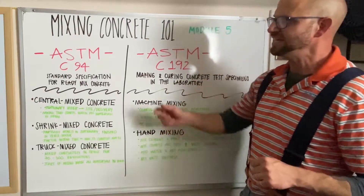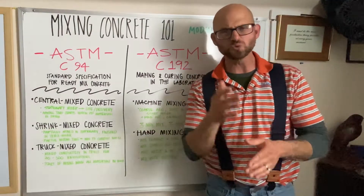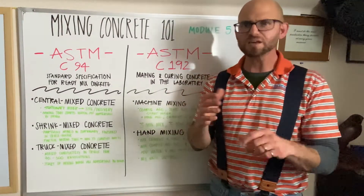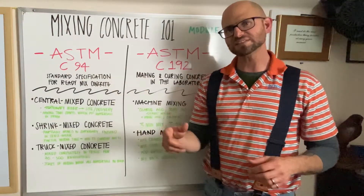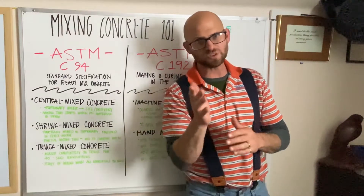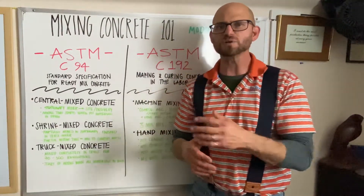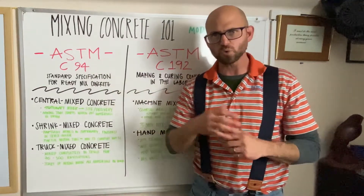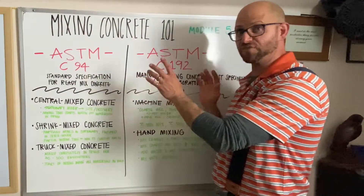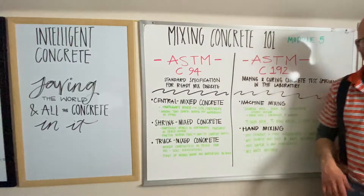What we're going to focus on is ASTM C-94 and ASTM C-192, two different ASTMs used to mix and make concrete at a ready-mix installation and here in our laboratory. It's important to understand both of these, especially for our cadets and junior engineers, because when you get out to the real world or the construction industry, both of them are used in two different environments.